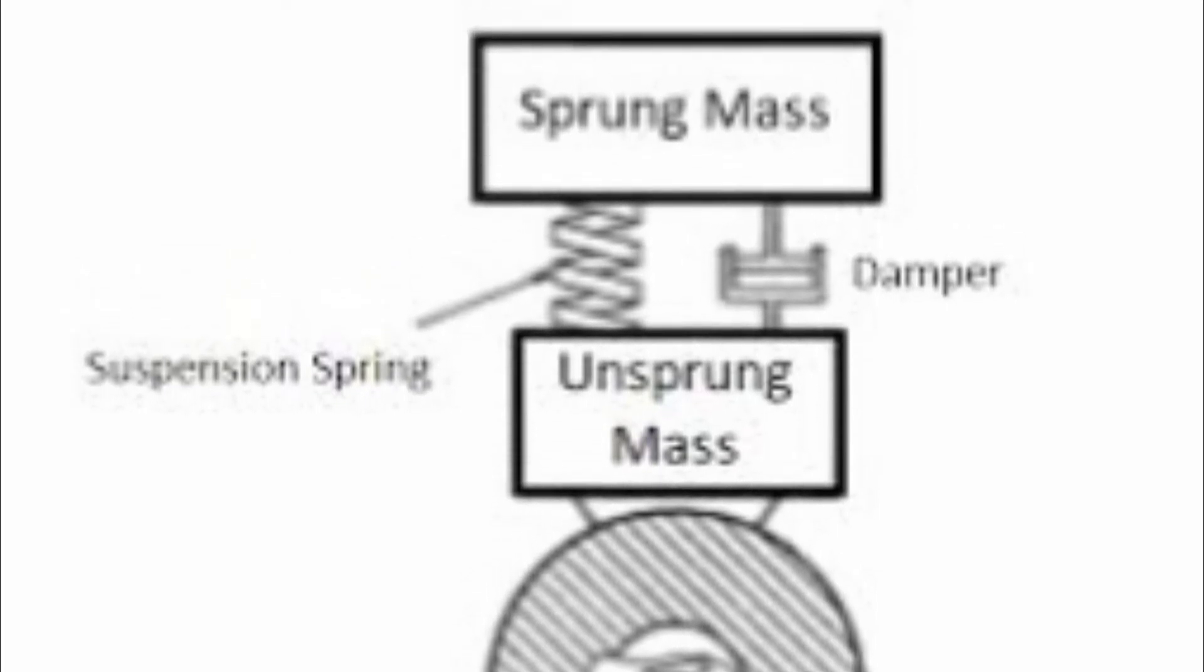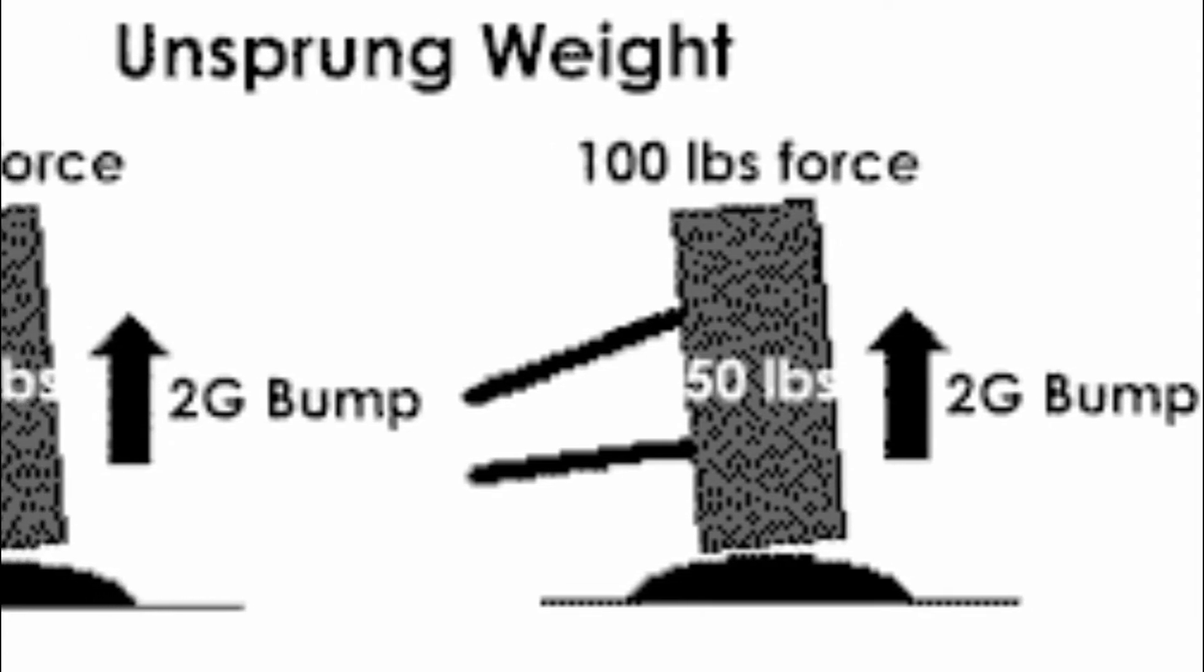The mass of the body and other components supported by the suspension is the sprung mass.